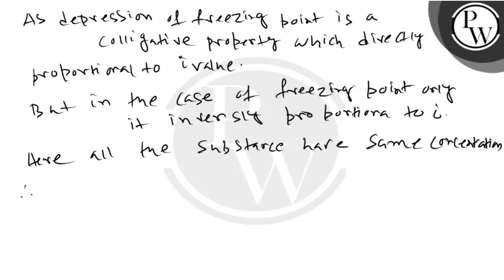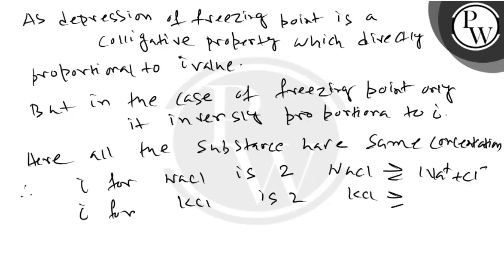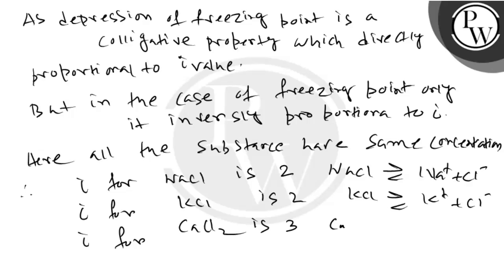Therefore, i for NaCl is 2, because NaCl dissociates as Na⁺ plus Cl⁻. i for KCl is also 2, as KCl dissociates as K⁺ plus Cl⁻.